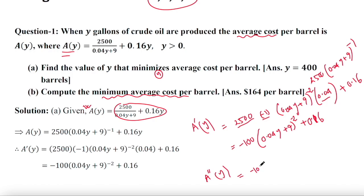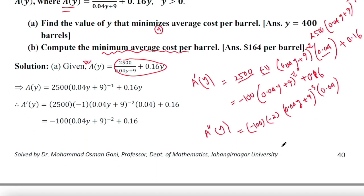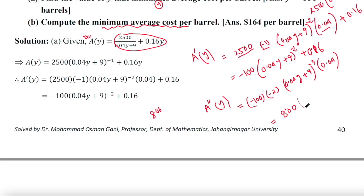The second derivative will be minus 100 times minus 2 times (0.04y + 9) to the power minus 3 times 0.04, plus 0 since 0.16 is a constant. So the second derivative equals 8 times (0.04y + 9) to the power negative 3.